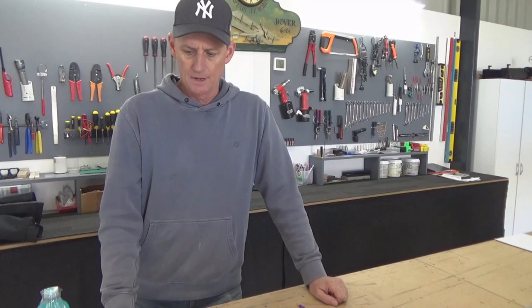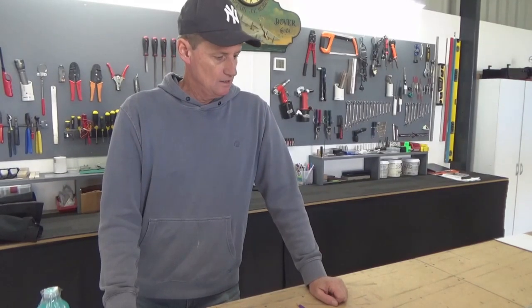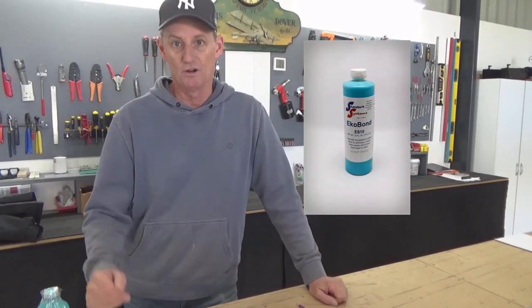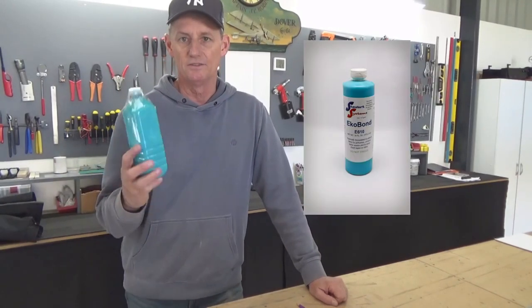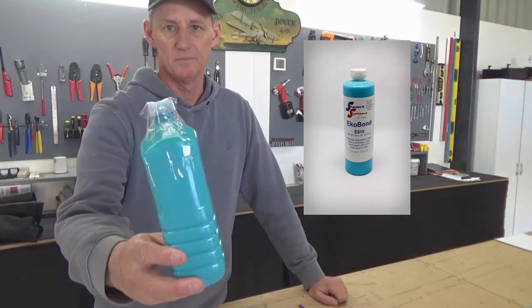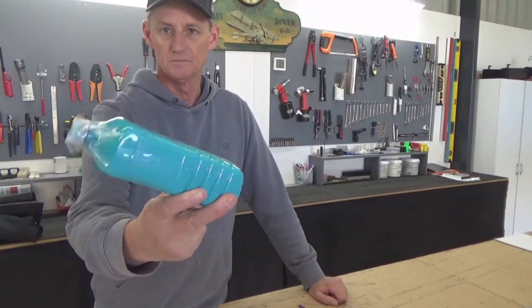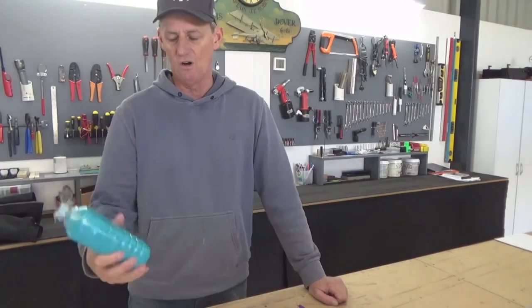Don't want to be too negative on this channel but these are just the experiences of building an aircraft, going through the processes. Ordered my fabric, got the fabric, and I ordered some Stuart System Ecobind which is the glue. I'll put a picture of that up if I can find one, what I thought I was getting. Anyway, this is what rocks up - just a Mount Franklin water bottle with some blue liquid in it. So that's fine but...